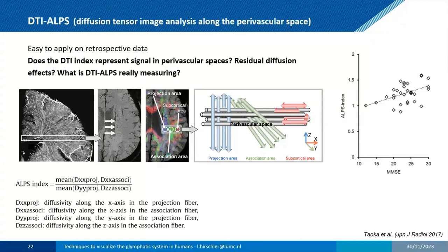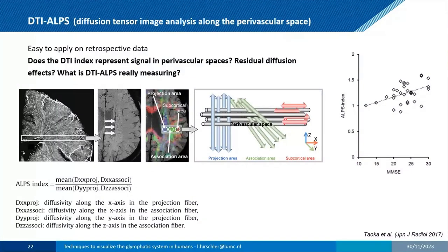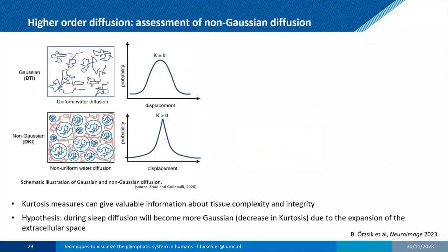However, DTI-ALPS is totally unspecific to CSF. We don't really know what it measures — it could be residual diffusion effects, tissue motion, or CSF motion, but it could also be many other things. Even though it is increasingly used because it relies on standard DTI data, whether it truly measures glymphatic activity is very debated and it should be used with caution.